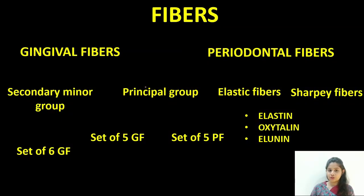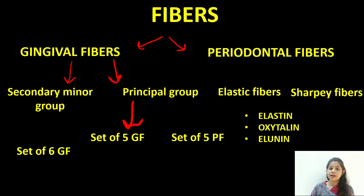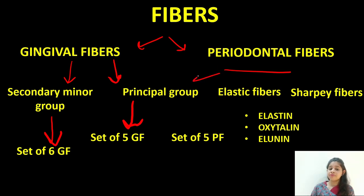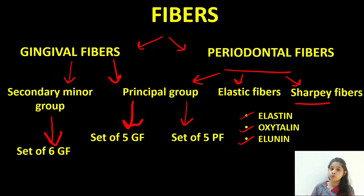To summarize: we discussed gingival and periodontal fibers. For gingival fibers, we covered the secondary minor group and the principal or major group. The principal group is a set of five fibers with the mnemonic 'DAD CALLED TOM,' while the secondary minor group is a set of six fibers with the mnemonic 'PITS.' For periodontal fibers, present in the periodontal ligament space, they are classified into the principal group, elastic group, and Sharpey's group. The principal group has five fibers, the elastic group includes elastin, oxytelin, and elaunin, and the Sharpey's fibers are those inserted into cementum or alveolar bone that undergo calcification.